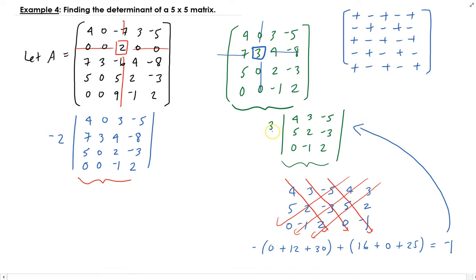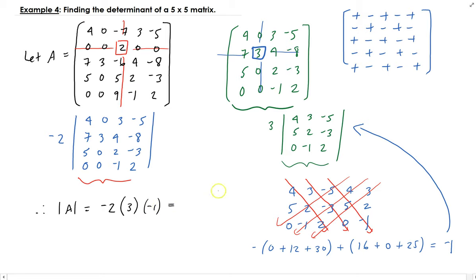So we multiply by three and then by minus two. Therefore, the determinant of A is minus two times three times negative one, and we end up getting a determinant of 6.